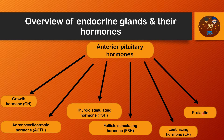The last anterior pituitary hormone is prolactin. It promotes the development of the breast and secretion of milk, so it is active primarily in females. These are all the anterior pituitary hormones.